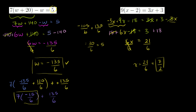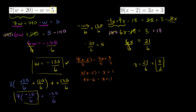Now I said there are multiple ways to do this problem. So you have 9(x - 2) = 3x + 3. I see a 9 and some 3s. What if I just divide both sides of this equation by 3? This becomes 3(x - 2) = x + 1. If I distribute: 3x - 6 = x + 1. Subtract x from both sides: 2x - 6 = 1. Add 6 to both sides: 2x = 7. Divide both sides by 2: x = 7/2.